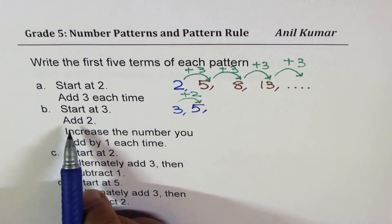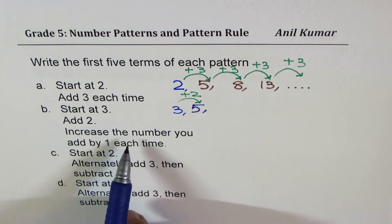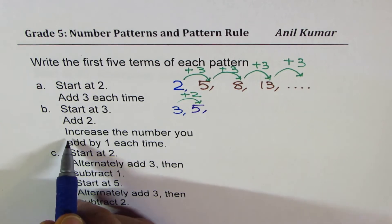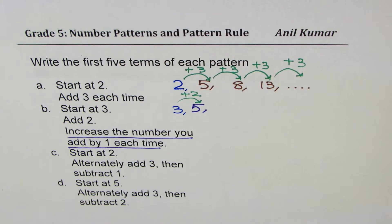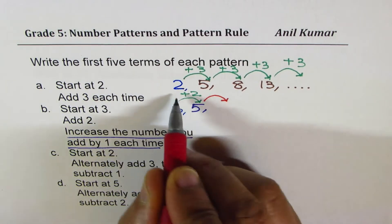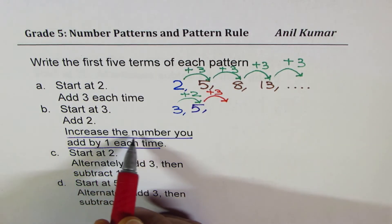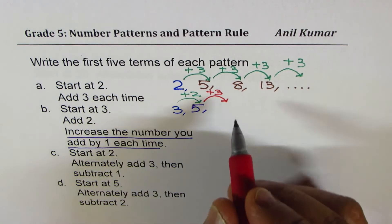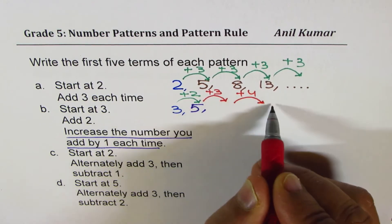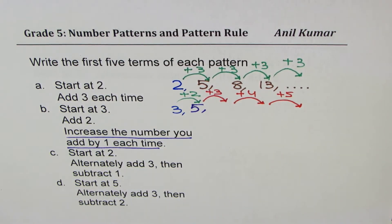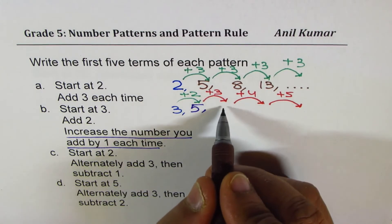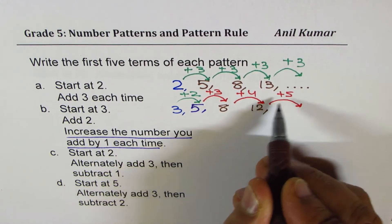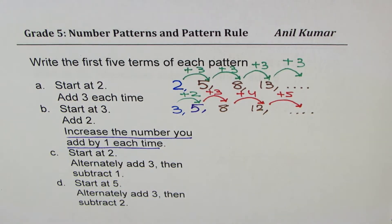So it says start at three, add two — we got five. Now, increase the number you add by one each time. That means next time you are going to add not two, but three — we have increased the number by one, so two plus one gives three. This time we add three, next time add four, then add five. So you get five plus three as eight, eight plus four as twelve, and twelve plus five you can write that. That is how your series increases.